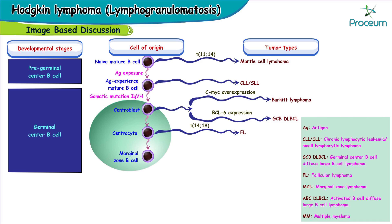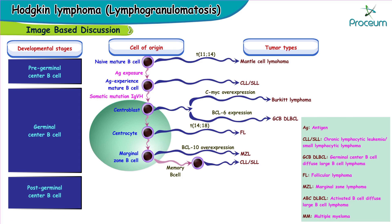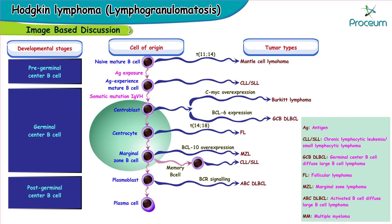If the marginal zone B-cell undergoes BCL-10 overexpression, it forms marginal zone lymphoma. Marginal zone B-cells can either get converted to a plasmablast or form a memory B-cell. Memory B-cells often undergo transformation to form CLL or SLL — chronic lymphocytic leukemia or small lymphocytic lymphoma. In the post-germinal center, the plasmablast can undergo BCR signaling to form diffuse large B-cell lymphoma of the ABC type. Eventually, plasmablasts convert into plasma cells, which have a propensity to undergo modifications to form multiple myeloma.